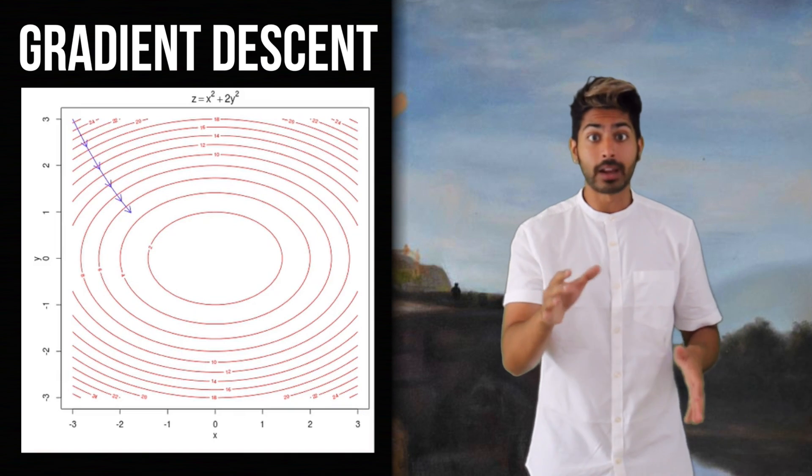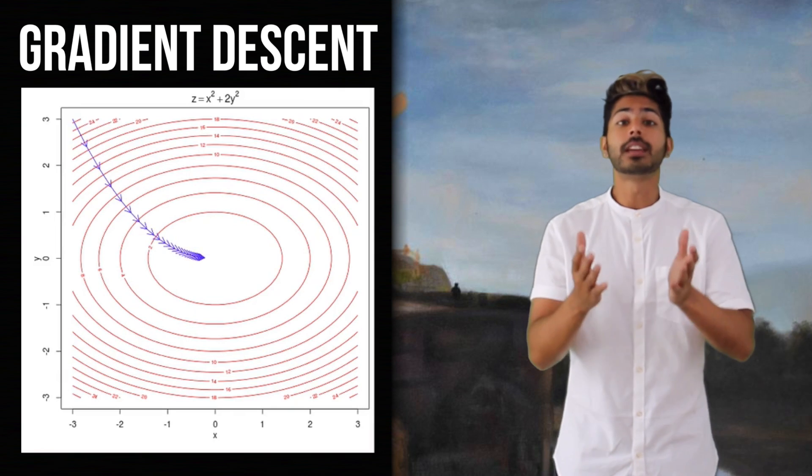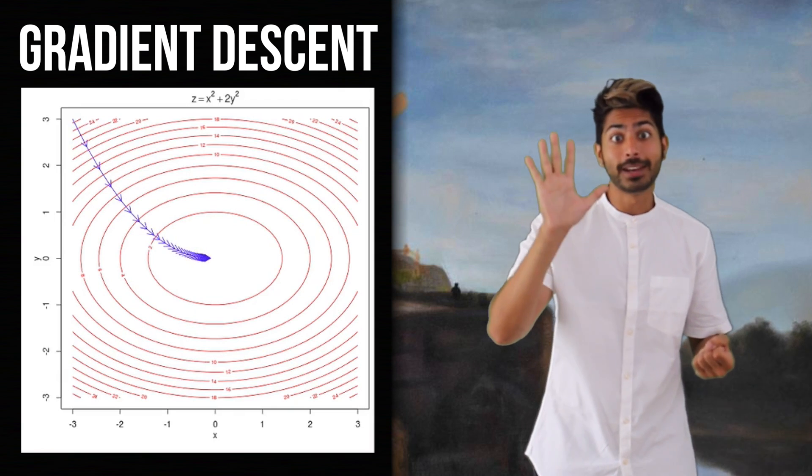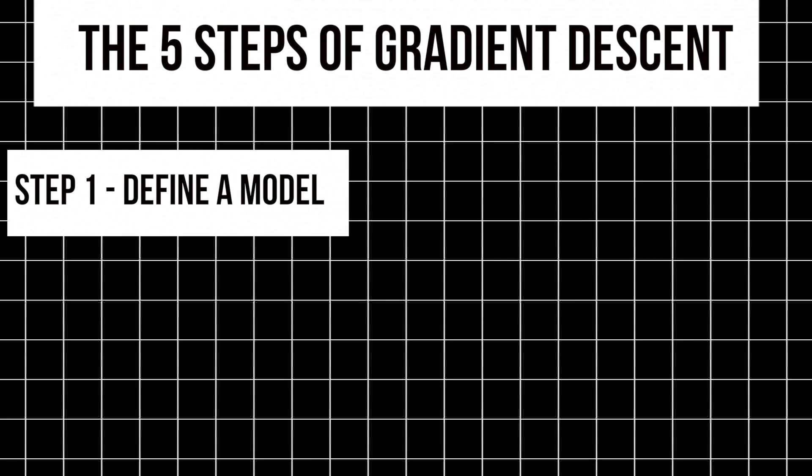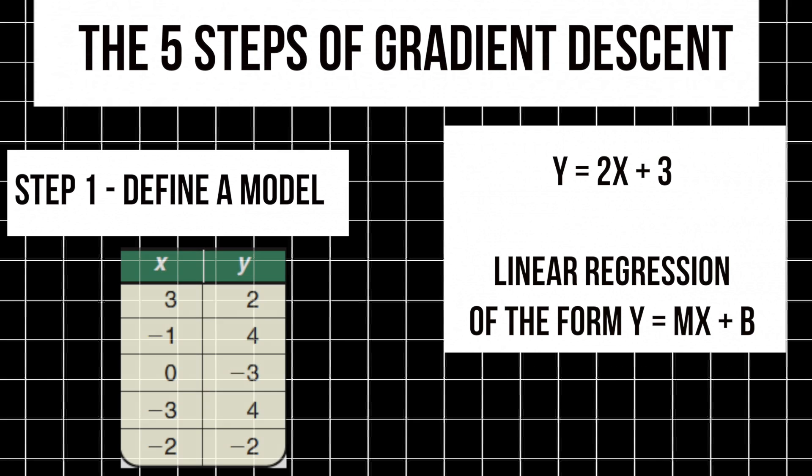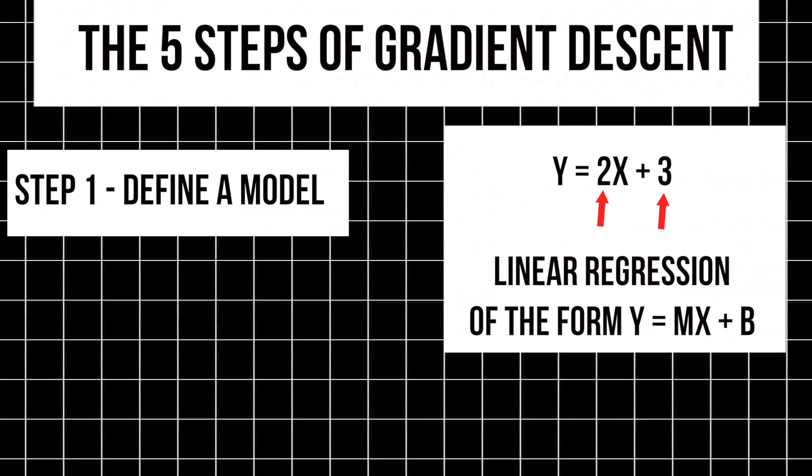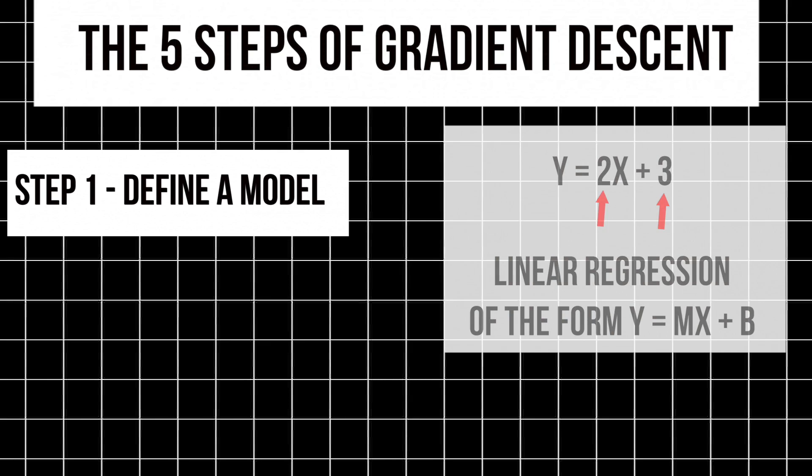Last week, we talked about a popular optimization technique called gradient descent. This can be broken down into a five-step process. First, we define some machine learning model with a set of initial weight values. These act as the coefficients of the function that the model represents, the mapping between input data and output predictions. These values are naive. We have no idea what they should actually be, but we're trying to discover the optimal ones.